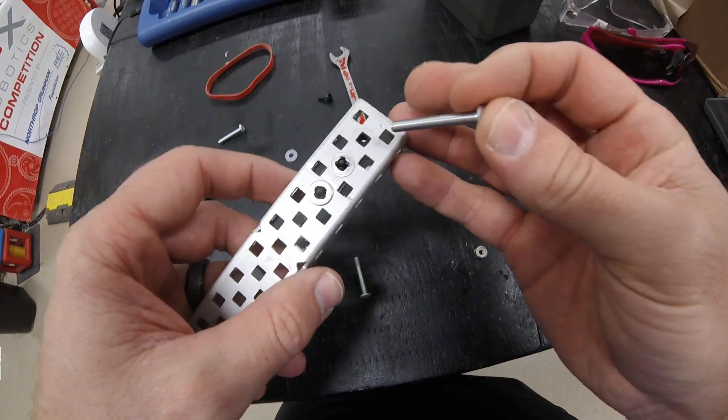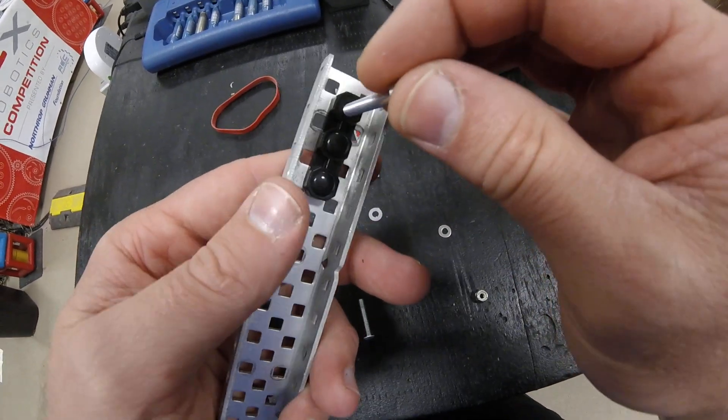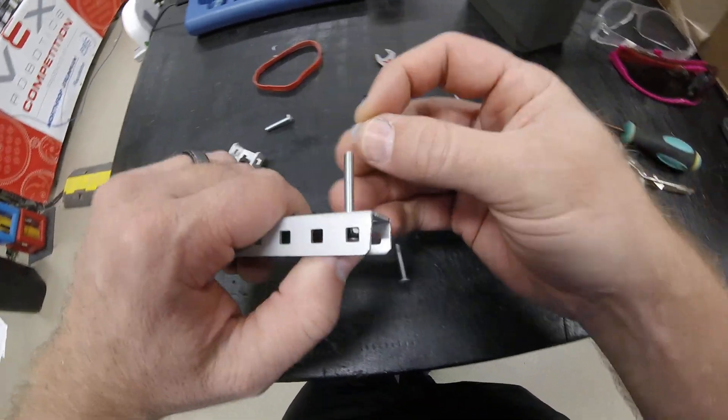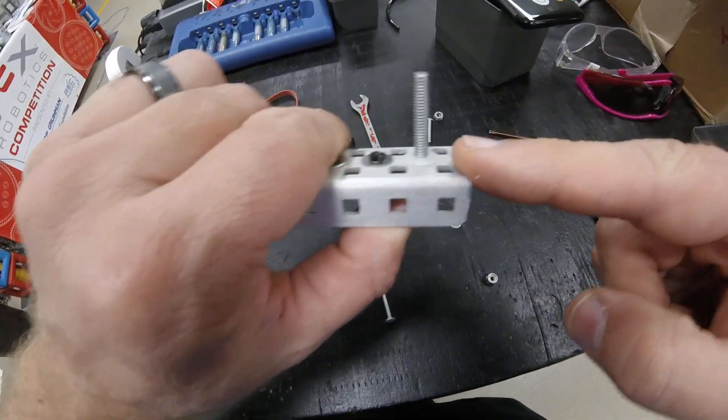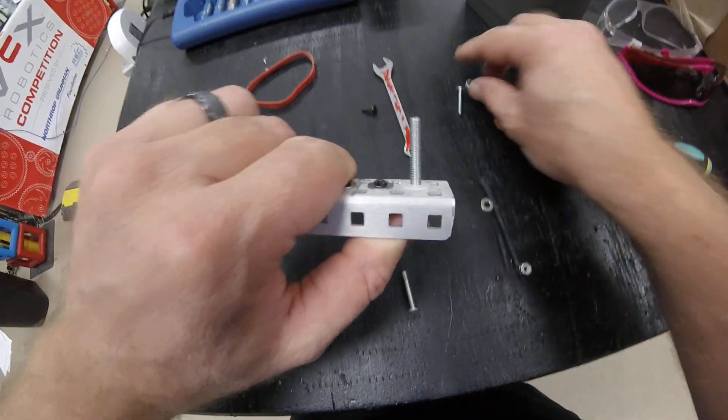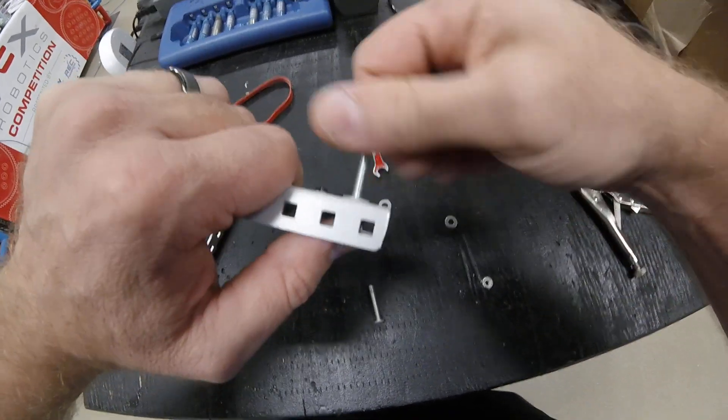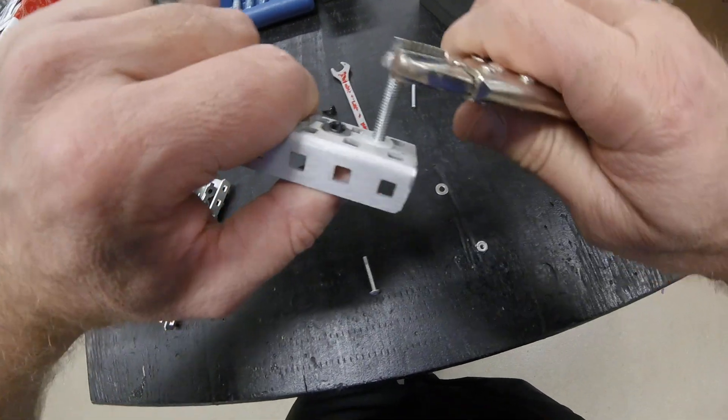Now we're going to grab our bolt, so we're going to go in through this side. One of the parts that you're not used to using is one of the teflons, so we're going to go ahead and put one of the teflon washers on there. Then we're going to take our jam nut and we're going to put that jam nut all the way on there.